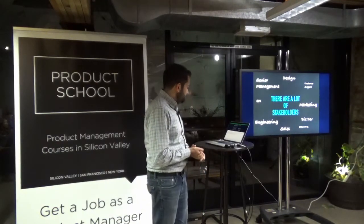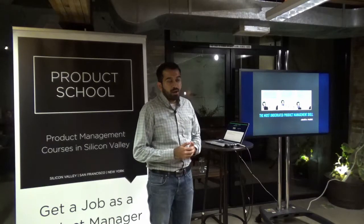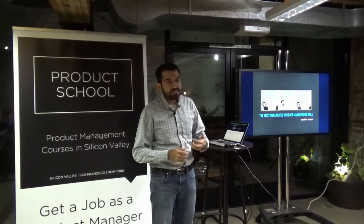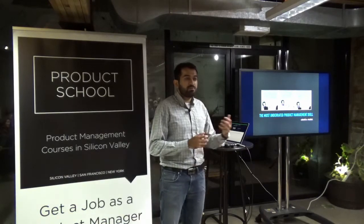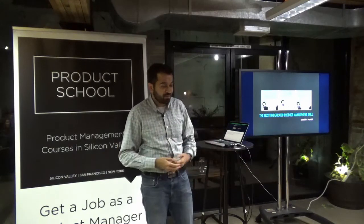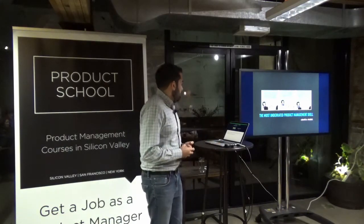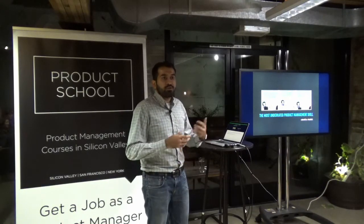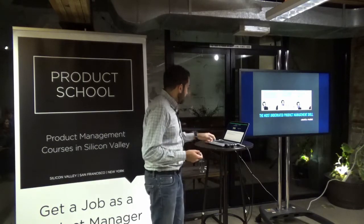Influencing without authority is what Sachin Reiki called the most underrated PM skill. Writing requirements, you can learn. Working with engineers, technical skills, design — all way more easily learned than navigating this maze of figuring out how to convince people. This is really hard, especially if you're a new PM starting on a team. The team expects you to be the savior who figures out what's going on. It's hard to have that authority from the get-go. I like to think of skills as things you can learn, and influencing without authority is something you can develop — hopefully we'll cover a bit of that today.